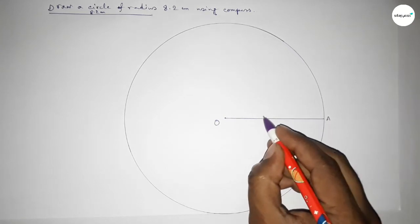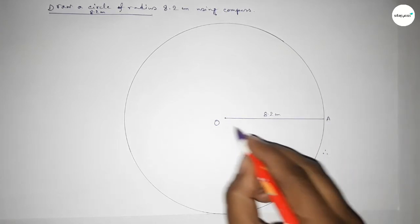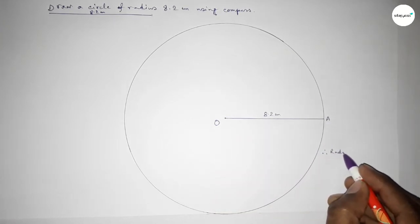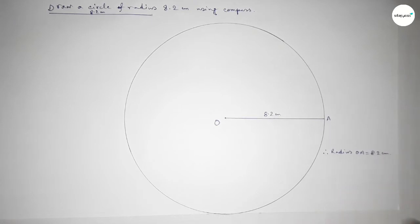Taking here point A. So OA equals 8.2 centimeters. Therefore, radius OA equals 8.2 centimeters. That's all, thanks for watching. If this video is helpful to you, then please share it with your friends. Thanks for watching.